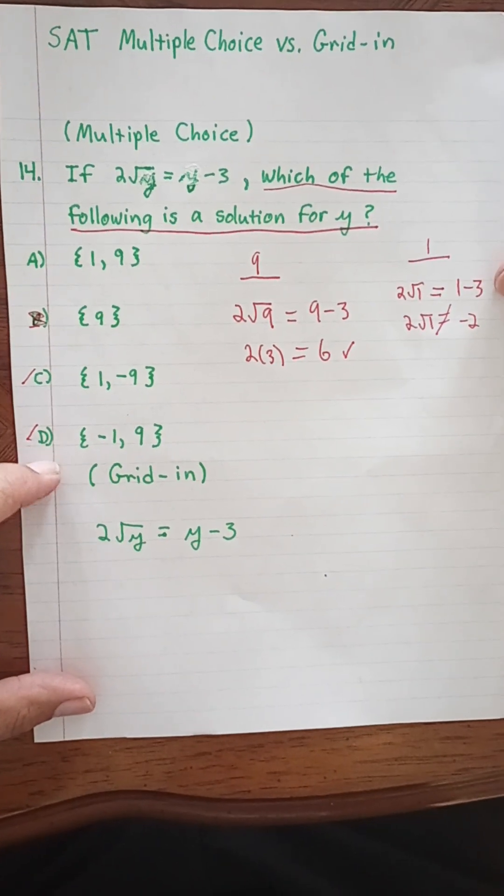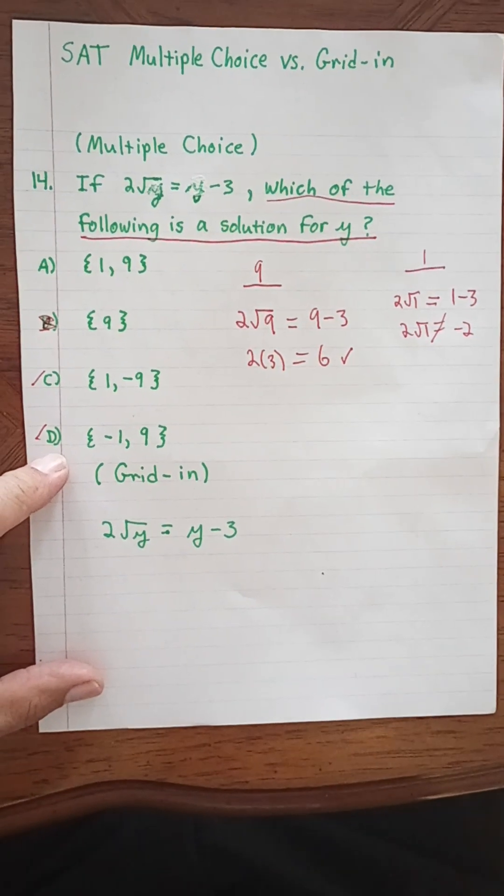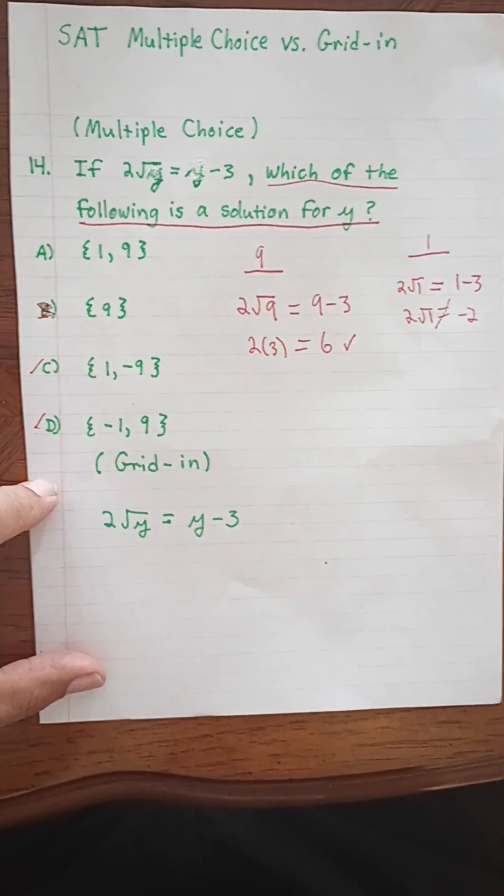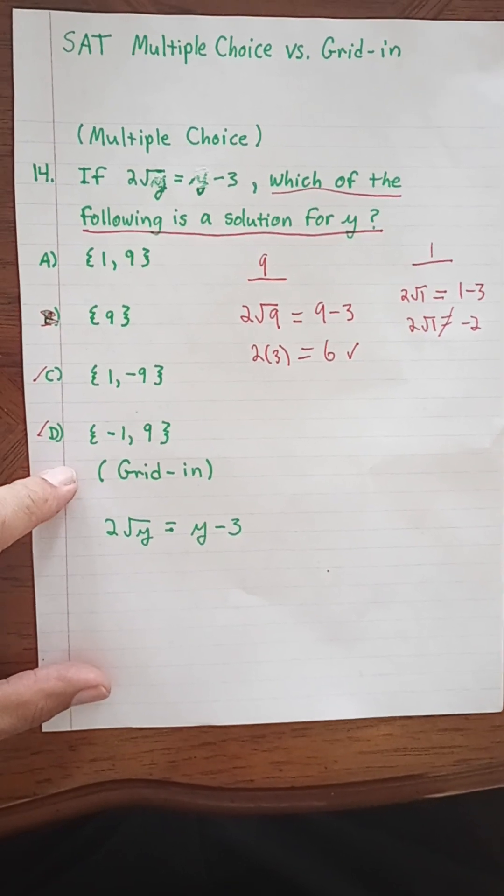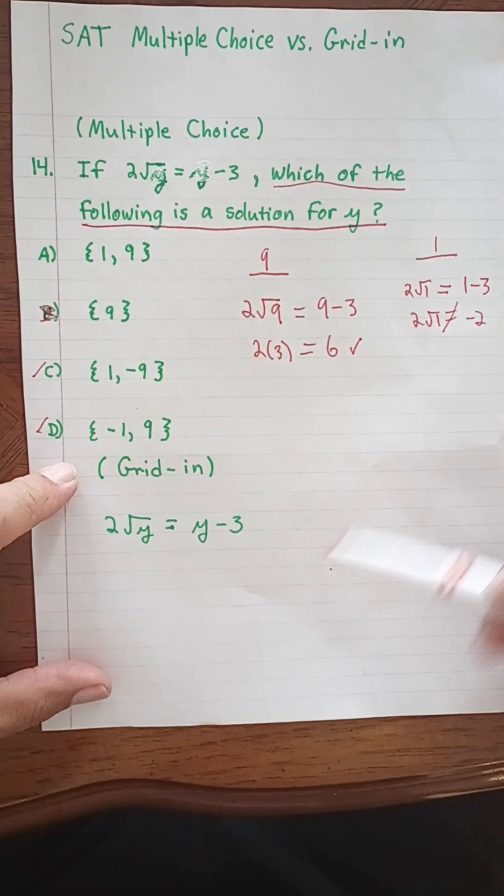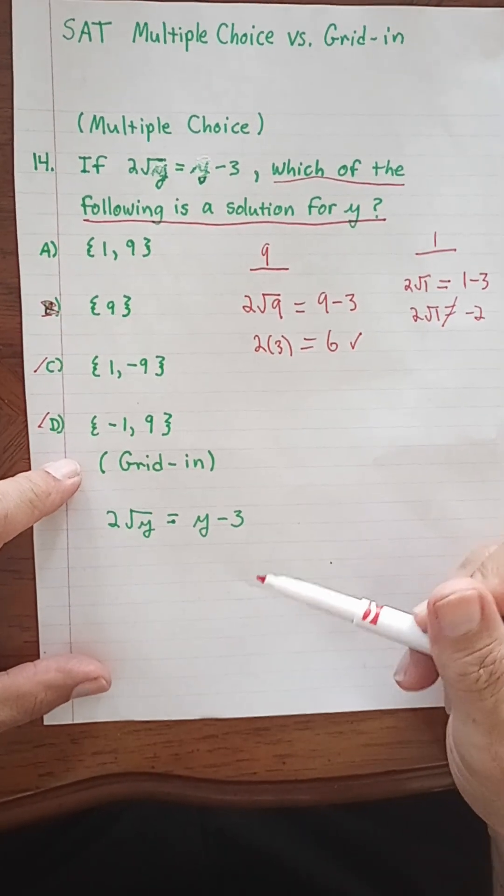Now what if this were a grid-in problem? We wouldn't have the benefit of multiple-choice answers and would have to actually go through and work this a little bit harder. So let's see what we would do here. We have 2 times the square root of y equals y minus 3.